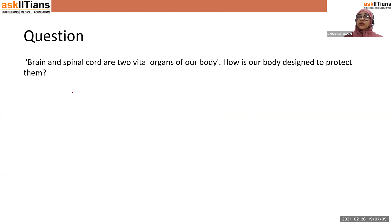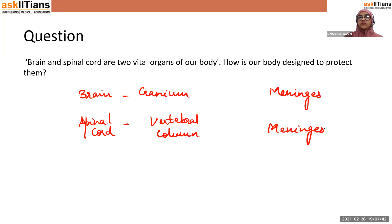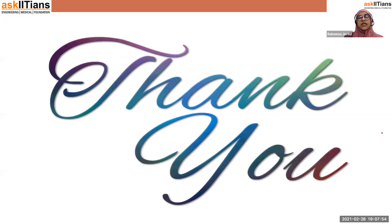Brain and spinal cord are two vital organs. How is our body designed to protect them? First, there is bony exoskeleton: the brain is enclosed inside the cranium, and the spinal cord is inside the vertebral column. Second, there are meninges present in both organs. Third, there is cerebrospinal fluid. Both the meninges and CSF protect against mechanical shocks and injuries. So we have reached the end of the video — thank you for watching. Please post any questions on the forum, and stay tuned for the next video.